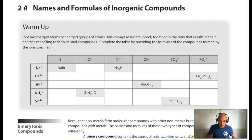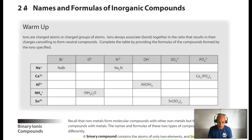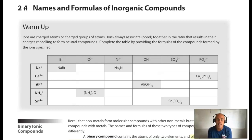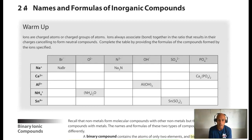Section 2.4 is about how to name and write the formulas for inorganic compounds. We're going to learn today there's three types of inorganic compounds: ionic compounds, molecular compounds, and acids. In theory you learned a little bit about each of those in your first year class — what differentiates them, how we can recognize them, and some of their properties. I'll assume most of that is background knowledge, and if you aren't terribly comfortable with the differences, it'll get revealed over time in this class.